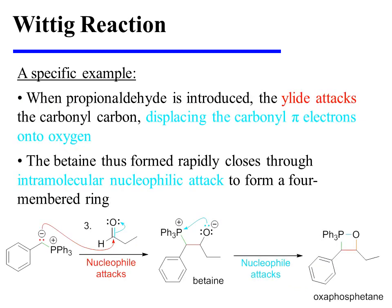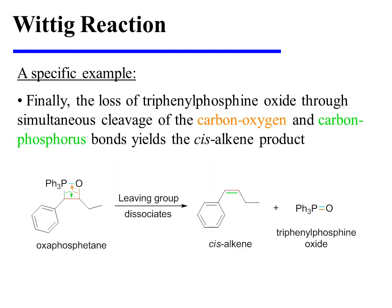When propionaldehyde is introduced in the third step of the reaction, the ylid attacks the carbonyl carbon. This displaces the carbonyl pi-bonding electrons onto oxygen. The immediate product is a betaine, but the betaine rapidly closes through intramolecular nucleophilic attack to form a four-membered ring known as the oxaphosphatane. Finally, the loss of triphenylphosphine oxide occurs through simultaneous cleavage of the carbon-oxygen and carbon-phosphorus bonds, which also affords the cis-alkene product.